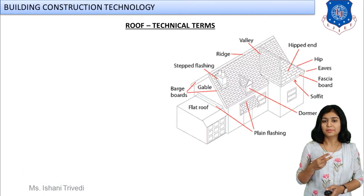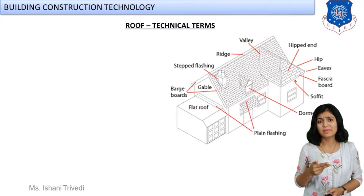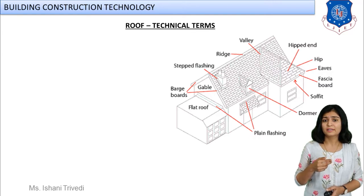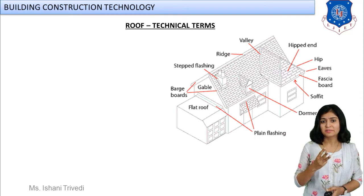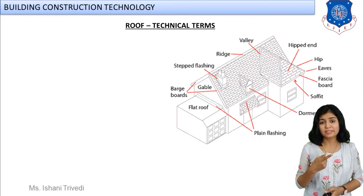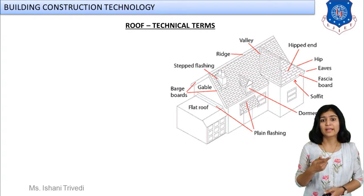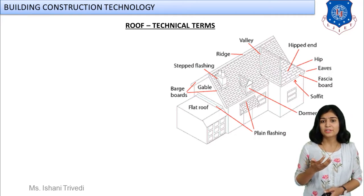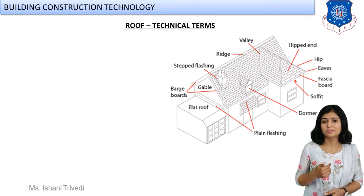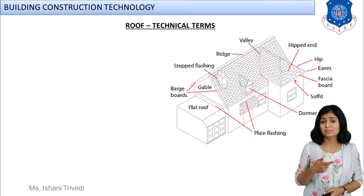If you remember, I had discussed the basic concepts of the roof and the different types of roof. There are three classifications: flat roof, which is obvious; pitch roof, which you have seen in rural and village areas; and also in urban areas and western countries, this type of roof is very common — especially in European towns and villages.